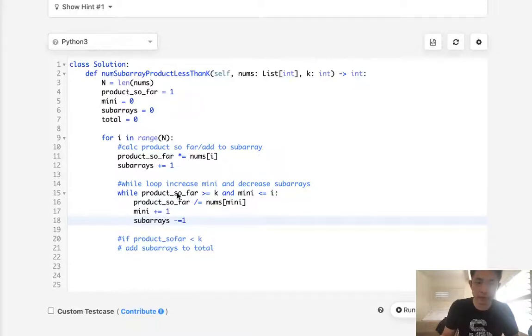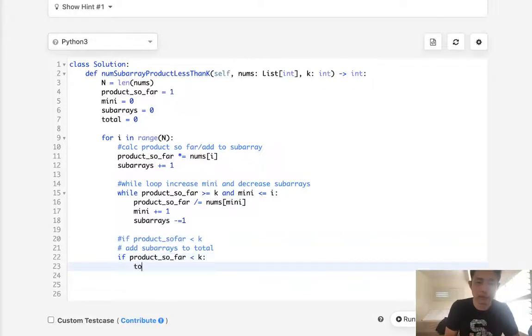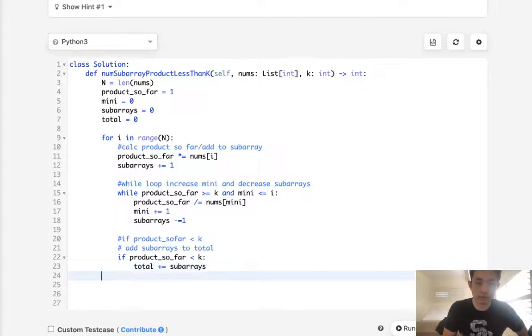Now, once this part is reached, either our product so far is now less than k, or our mini is pointing to the index that we are at. If product so far is less than k, then we're going to add to our total, total number of subarrays.